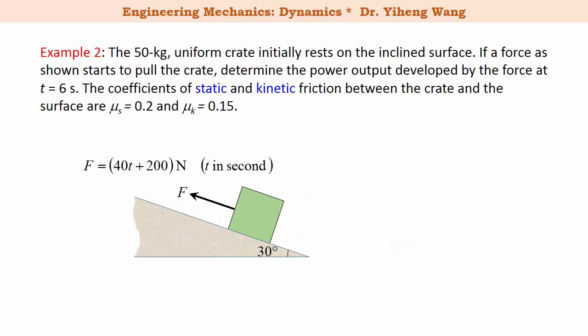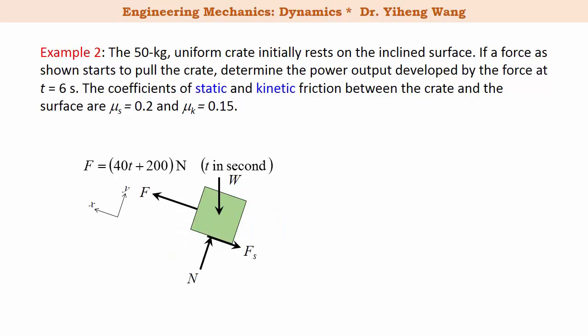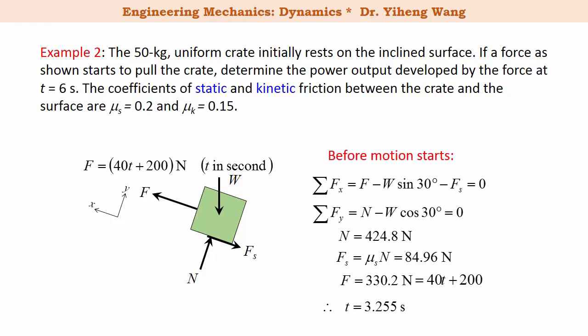Let's revisit another example. We need to determine the power of the force at time equals 6 seconds, where power is the magnitude of force multiplied by velocity. Previously we solved this using equations of motion and kinematics. Here we'll use the principle of linear impulse and momentum. We start with the free body diagram and determine when motion starts — that is, when the maximum static frictional force between the crate and the surface is overcome, using equilibrium equations.